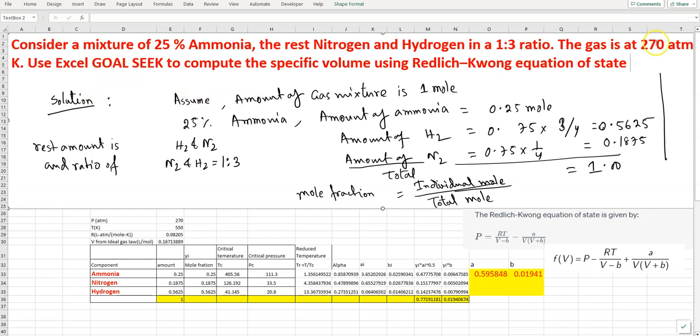We use Excel Goal Seek to compute the specific volume using the Redlich-Kwong equation of state. In my earlier videos I showed how to calculate mole fraction and the a and b constant values for the Redlich-Kwong equation. I have the a and b for the mixture, so now I will solve the Redlich-Kwong equation for this problem.